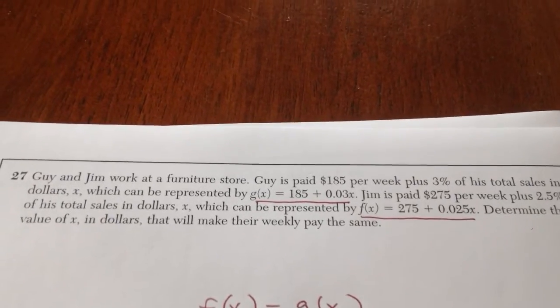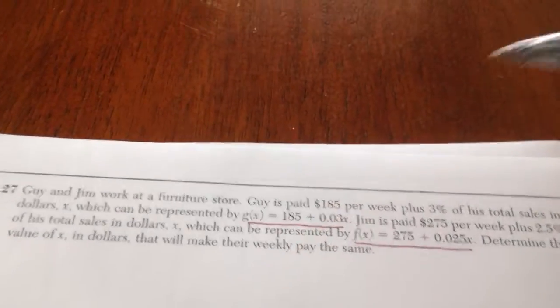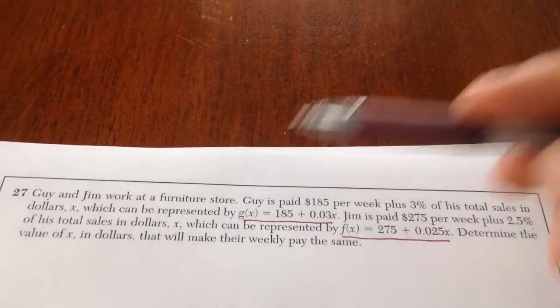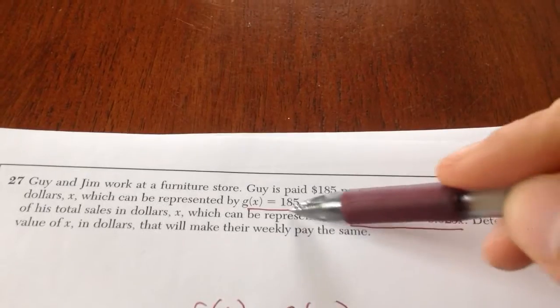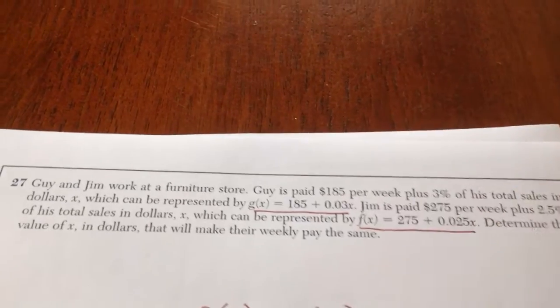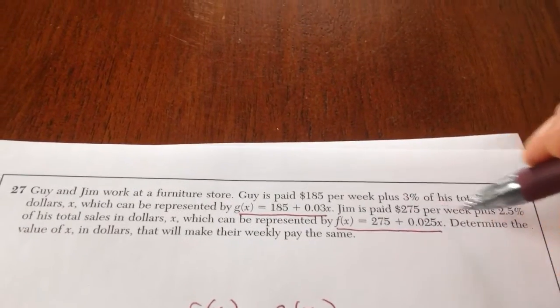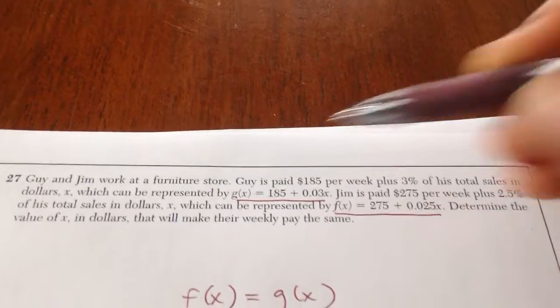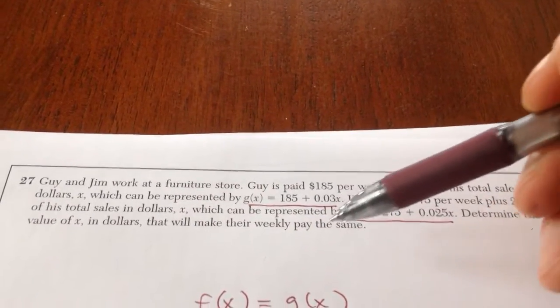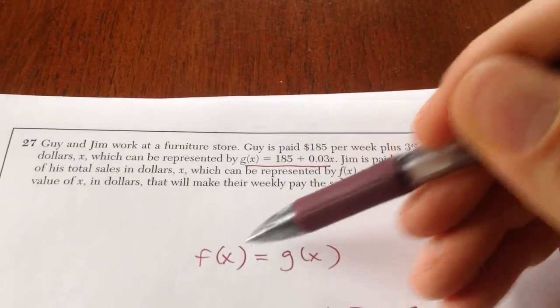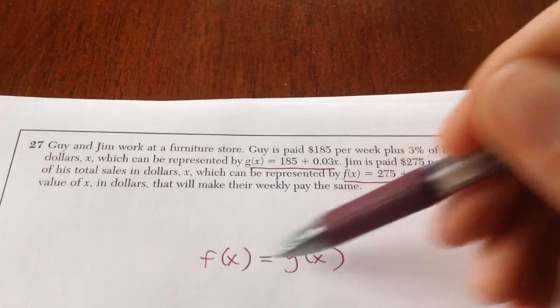Number 27, we know Guy and Jim work at a furniture store. They're telling you Guy is paid this much money. And then they give you a representation of his salary already in form of an equation. They do the same thing for Jim. Determine the value where they're the same. So we want to figure out where is f of x the same as g of x. We're going to set them equal.